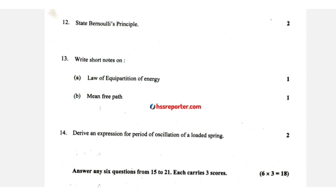Question 14: loaded spring time period. For a loaded spring, T equals 2 pi root of m by k, and for a simple pendulum T equals 2 pi root of l by g.